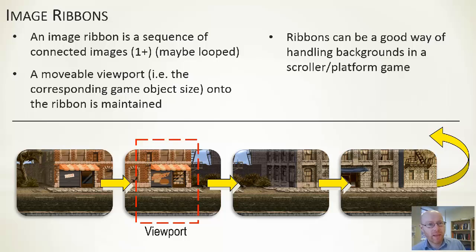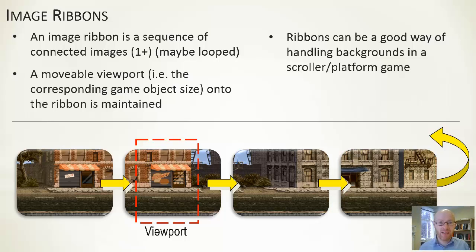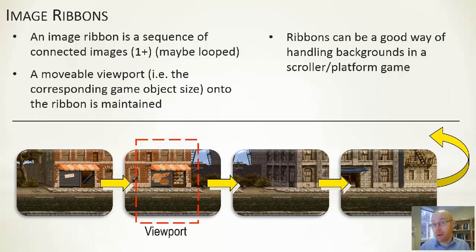Alongside that, with ribbons we often talk about a viewport — a region or portion that is visible — and as we move the viewport we see different parts of the ribbon. For example, in a 2D beat-em-up style game, backgrounds may be too large to load as one big image, so they're split into segments. As the player moves through, we change which segments are displayed on screen, and optionally loop back to the beginning.